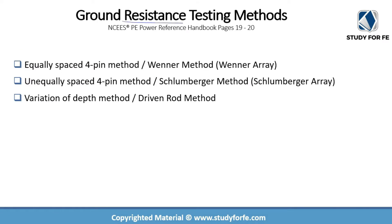There are many different methods for ground resistance testing. When you go through those IEEE standards you will find additional methods beyond the three discussed in the NCEES PE Power Reference Handbook. Each method has its own advantages and disadvantages — some are simpler to conduct, some provide higher accuracy at the expense of a more sophisticated setup. For our purpose we will look at the Wenner method with equally spaced four pins, the Schlumberger method with unequally spaced four pins, and the driven rod method using one test electrode.